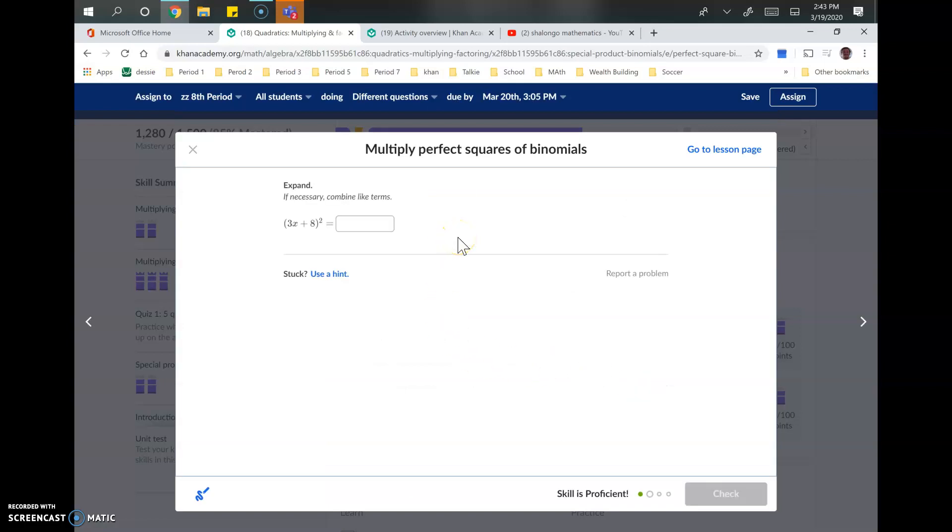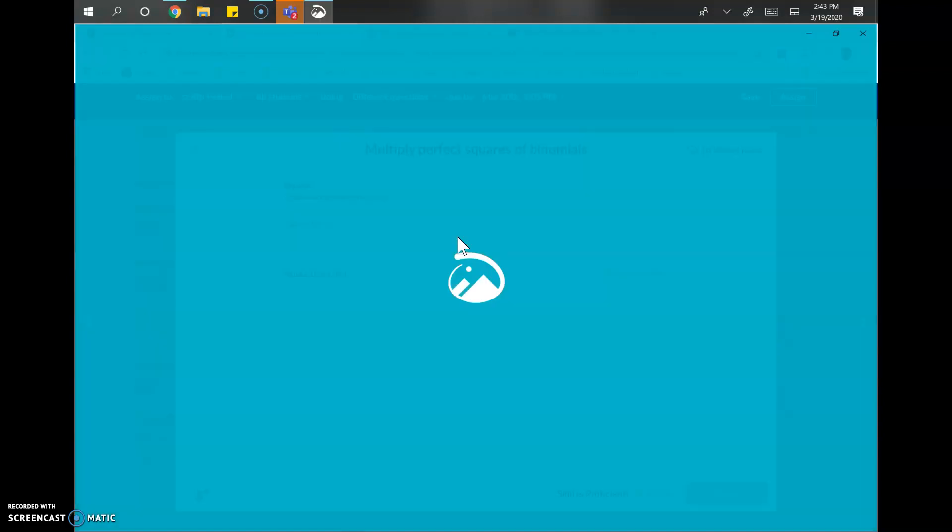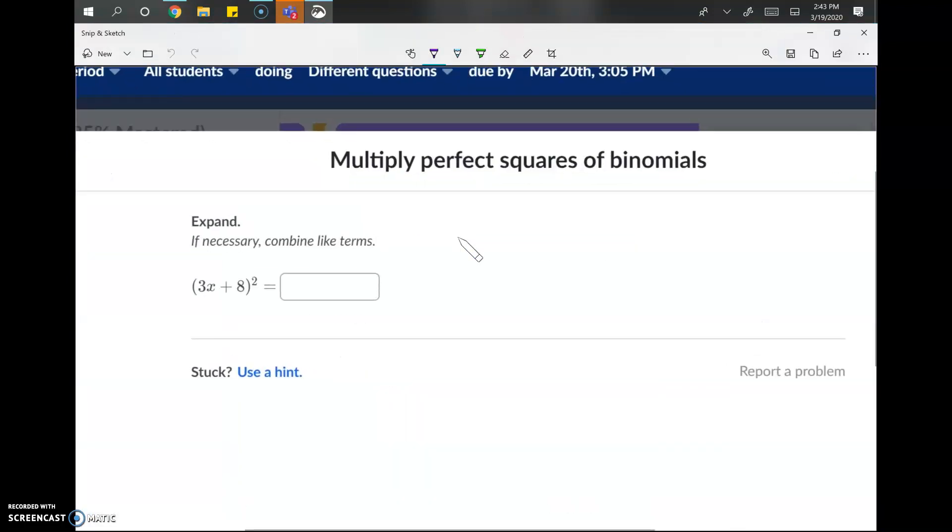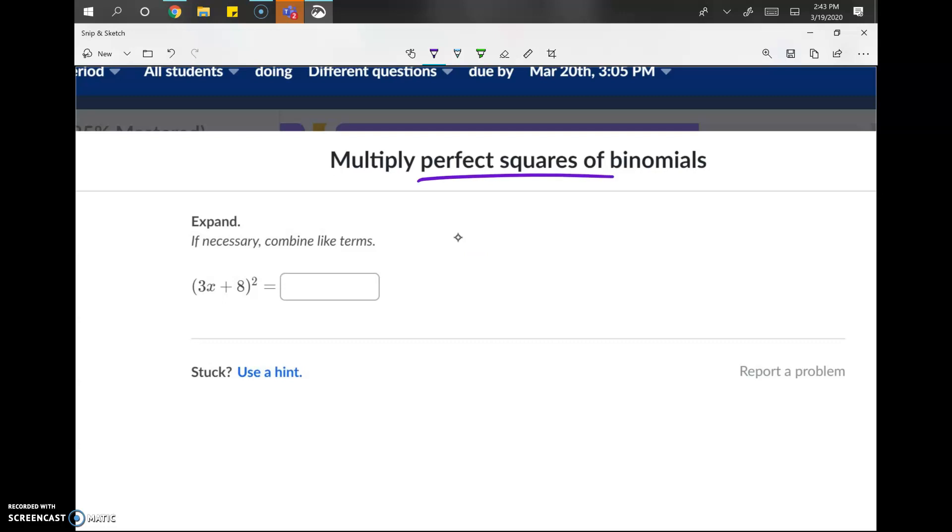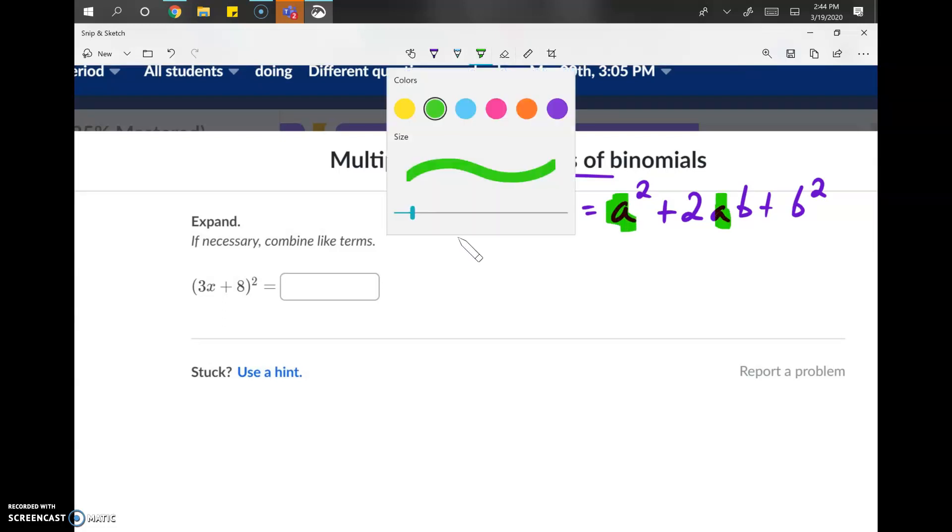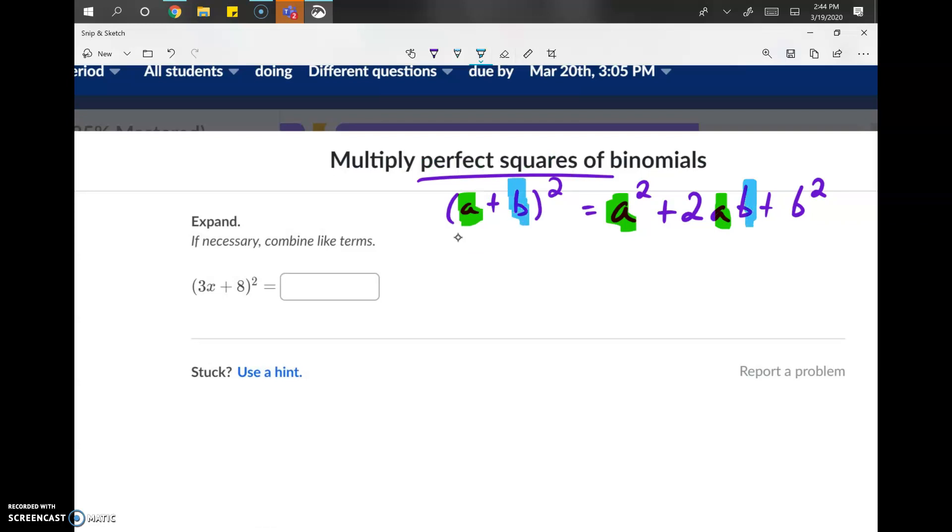Welcome back. Today, we're going to multiply perfect squares of binomials. A perfect square just means two of the same thing. So, I'm going to give you the formula for a perfect square. We have (a + b)², and we multiply it out. Essentially, we're going to multiply out to a² plus double whatever a times b is plus b². If we can figure out what a and what b are, then we can just plug those in and simplify and be done.